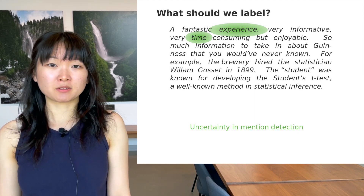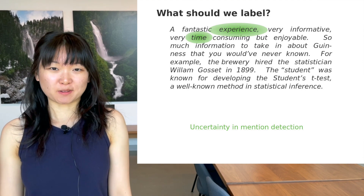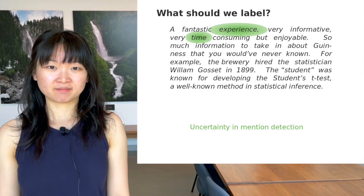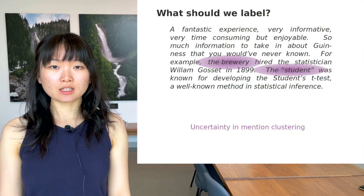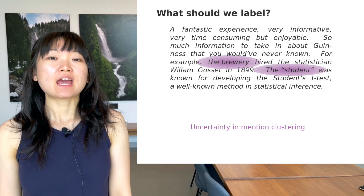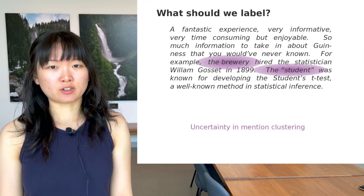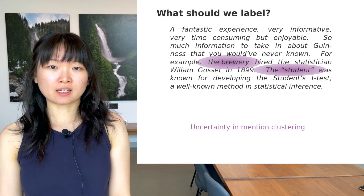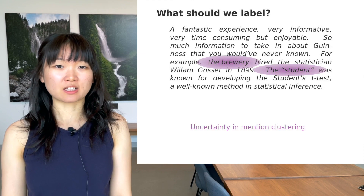Another confusing example would be 'time'. Because of how this review is written, the word 'time' may confuse the model as an entity mention. Second, we can consider labeling spans that confuse mention clustering. In the beginning of the video, I did not know the student referred to William Gossett. So, labeling the cluster of spans like 'the student' and 'the brewery' could help improve mention clustering.